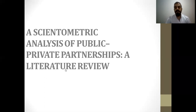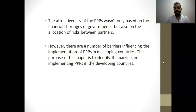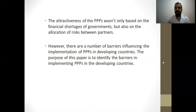Since the late 1990s, governments in both developed and developing countries have been increasingly involved in implementing public-private partnership policies to reduce their infrastructure deficits. The attractiveness of PPPs was not only based on the financial shortage of government, but also on the allocation of risk between partners. However, there are a number of barriers influencing the implementation of PPPs in developing countries. The purpose of this paper is to identify the barriers in implementing PPPs in developing countries.